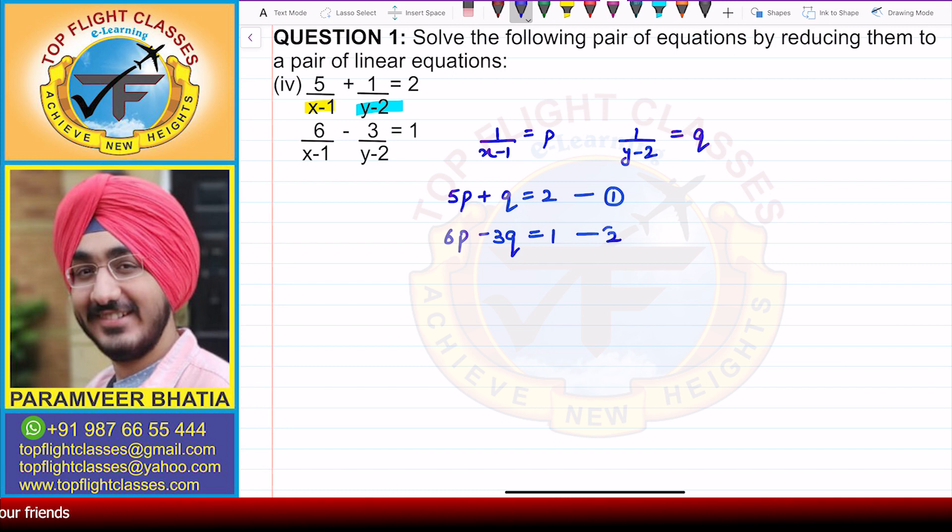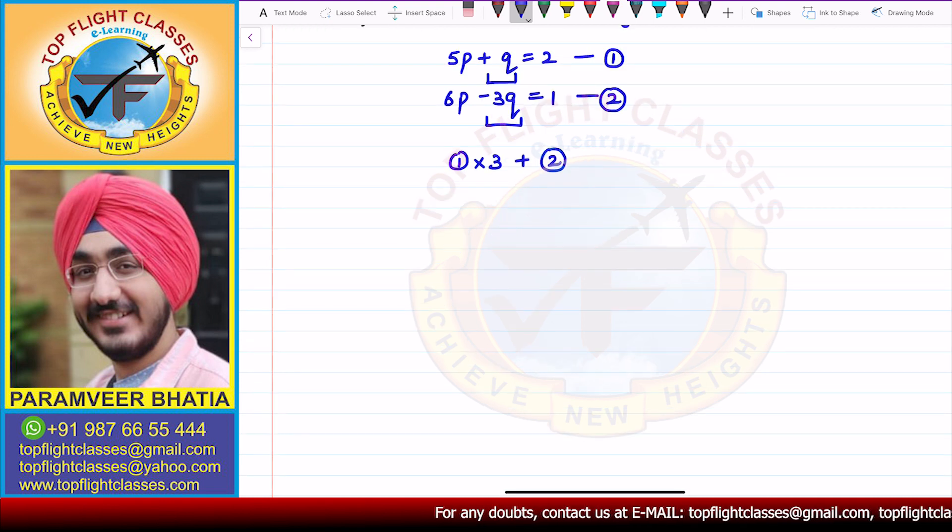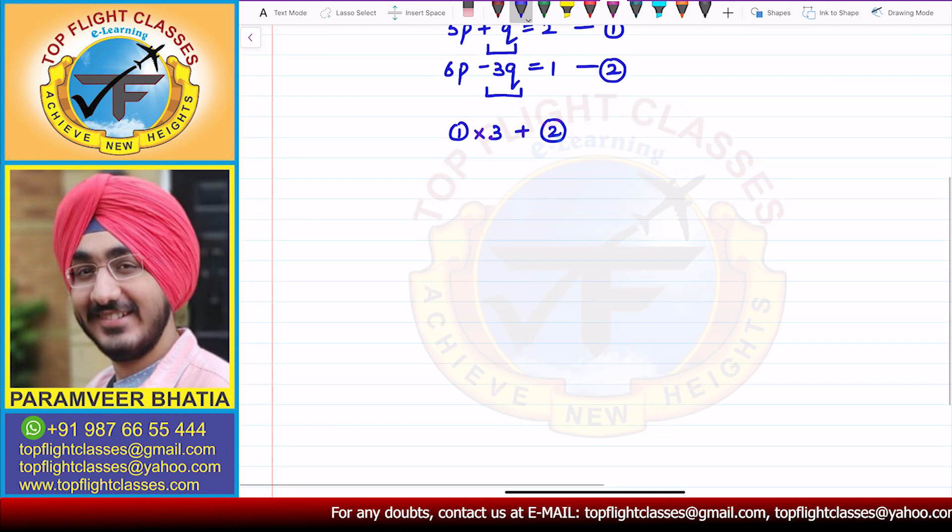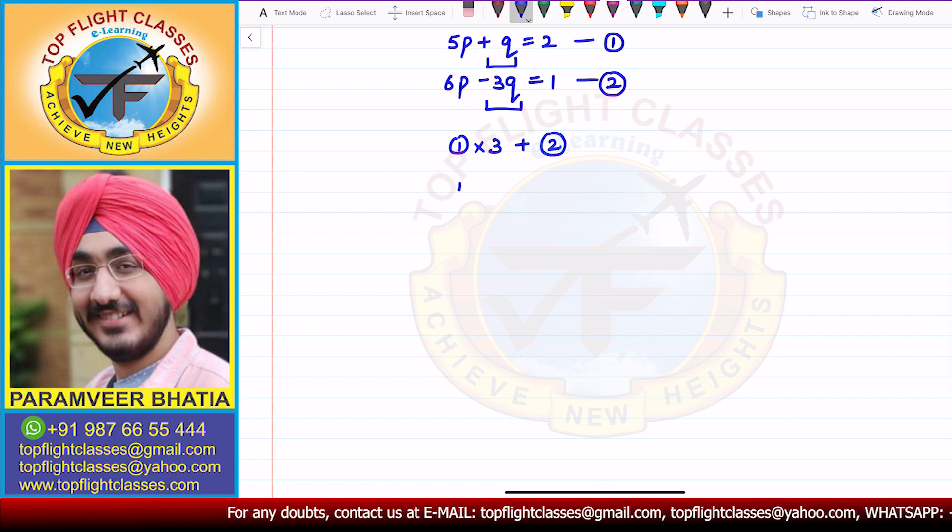Now you can see here this is only 1q, this is -3q. So I can multiply the first equation by 3 and add it with the second equation, and the q variable will be eliminated. So we can use the elimination method here.